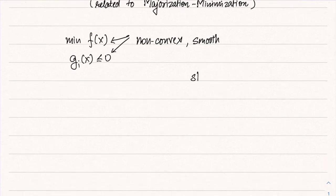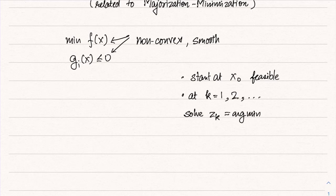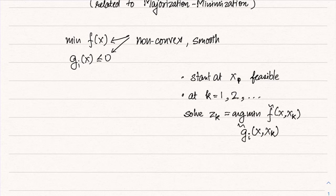The algorithm starts at some feasible x_0, where g_i(x_0) ≤ 0 for all i. Then we repeat: at iteration k, we solve z_k = argmin f̃(x, x_k), where f̃ is a convex approximation to the original f at x_k, subject to g̃_i(x, x_k) ≤ 0, where g̃ are convex approximations to the constraint functions g_i.